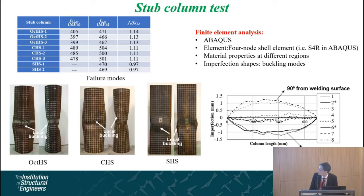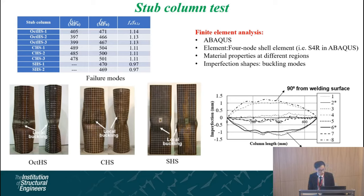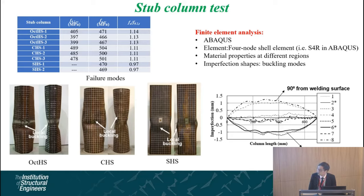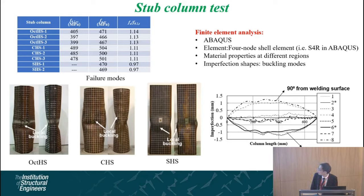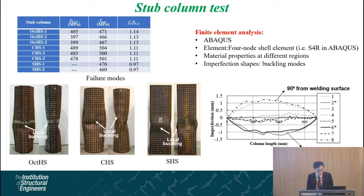The photos show the failure modes of all three sections. We also conducted finite element analysis using ABAQUS with four-node shell elements for modeling, considering material properties at different regions. For imperfection inputs, we measured the real imperfection in each tube. We found a bow-shaped global imperfection at the welding surface on the octagonal section, and used different buckling modes to replicate this imperfection in the finite element analysis.